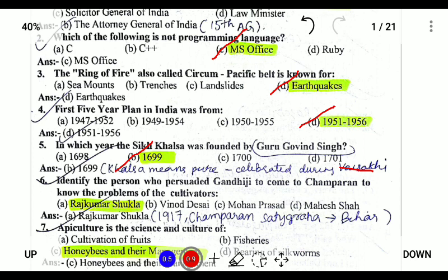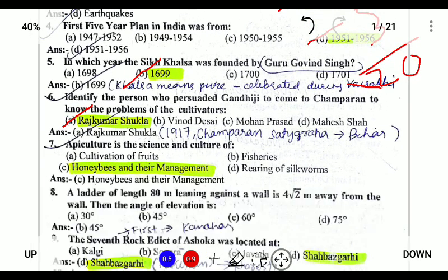Next, identify the person who persuaded Gandhi to come to Champaran to know about the problems of cultivators. The person was Rajkumar Shukla. He persuaded Gandhi to come to Champaran because the planters were demanding three-twentieths — that is the Teen Katiya system — in which farmers were forced to produce indigo. As a result, Gandhi was requested to come by Rajkumar Shukla in 1917, and it is located in Bihar.